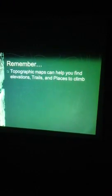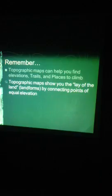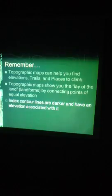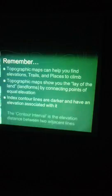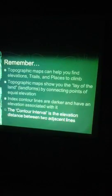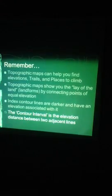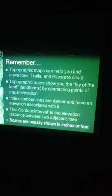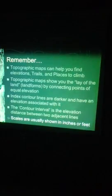Things to remember: Topographic maps can help you find elevations, trails, and places to climb. They show you the lay of the land by connecting points of equal elevation. The index contour lines are the darker ones and have an elevation label associated with them. The contour interval is the elevation difference between two adjacent lines. Scales on these maps are usually in inches or feet unless you're outside the United States, in which case they'll be in the metric system.